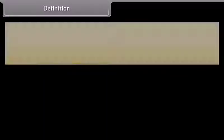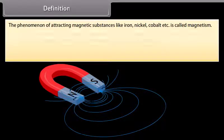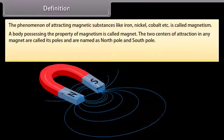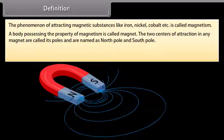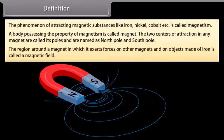Definition: The phenomenon of attracting magnetic substances like iron, nickel, cobalt, etc. is called magnetism. A body possessing the property of magnetism is called a magnet. The two centers of attraction in any magnet are called its poles and are named as north pole and south pole. The region around a magnet in which it exerts forces on other magnets and on objects made of iron is called a magnetic field.